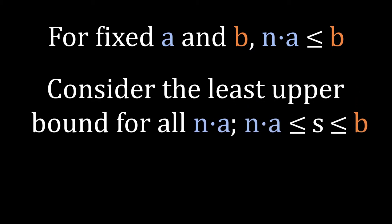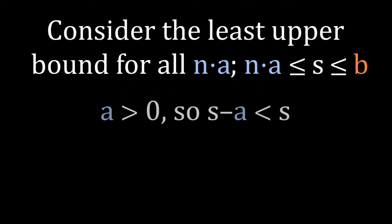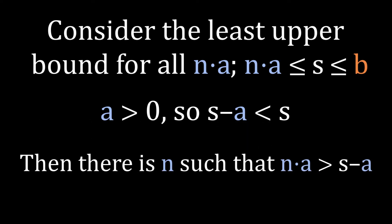Now, because A is positive, S minus A is less than S. And since S was the smallest upper bound of the set NA, S minus A can't be an upper bound. So there is some N for which NA is greater than S minus A.